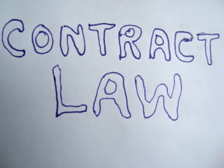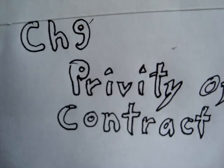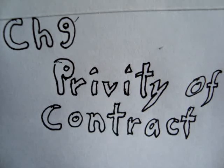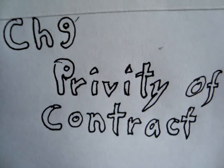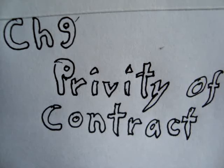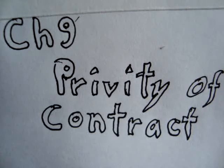Hello, and welcome to Chapter 9, Privity of Contract. The Privity of Contract states that a contract cannot confer rights or impose obligations on a person except the parties to it. Only the parties to the contract should be able to sue to enforce rights or claim for damages. As the saying goes: you can't sue or be sued under a contract unless you are a party to that contract.